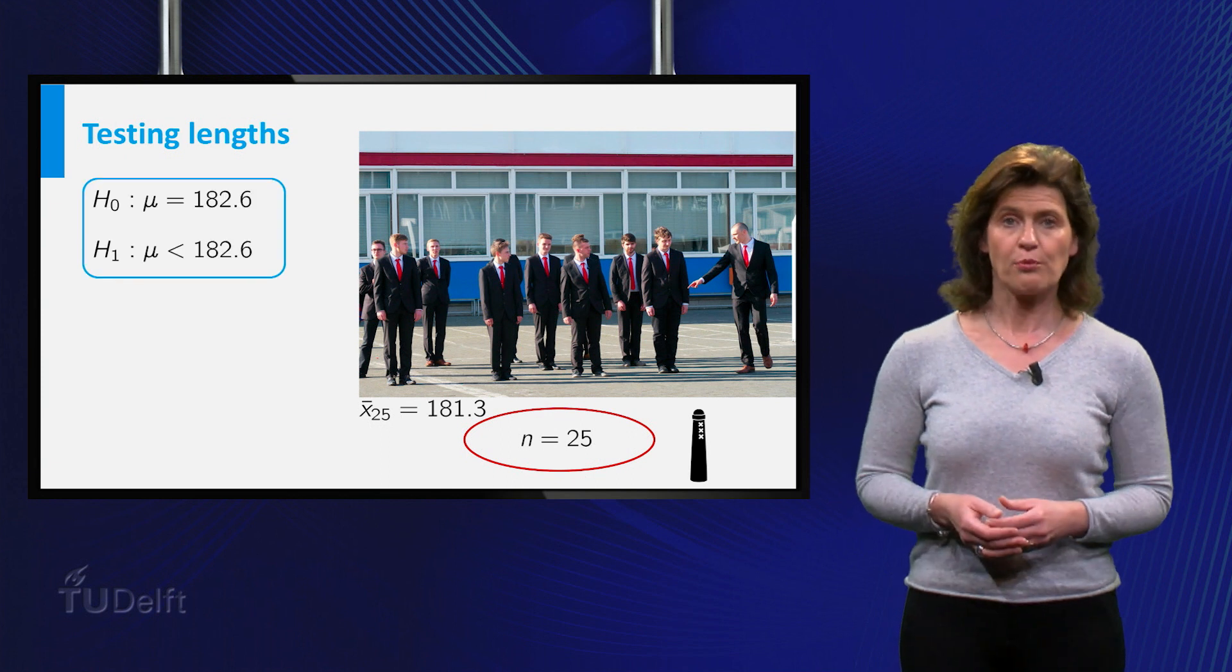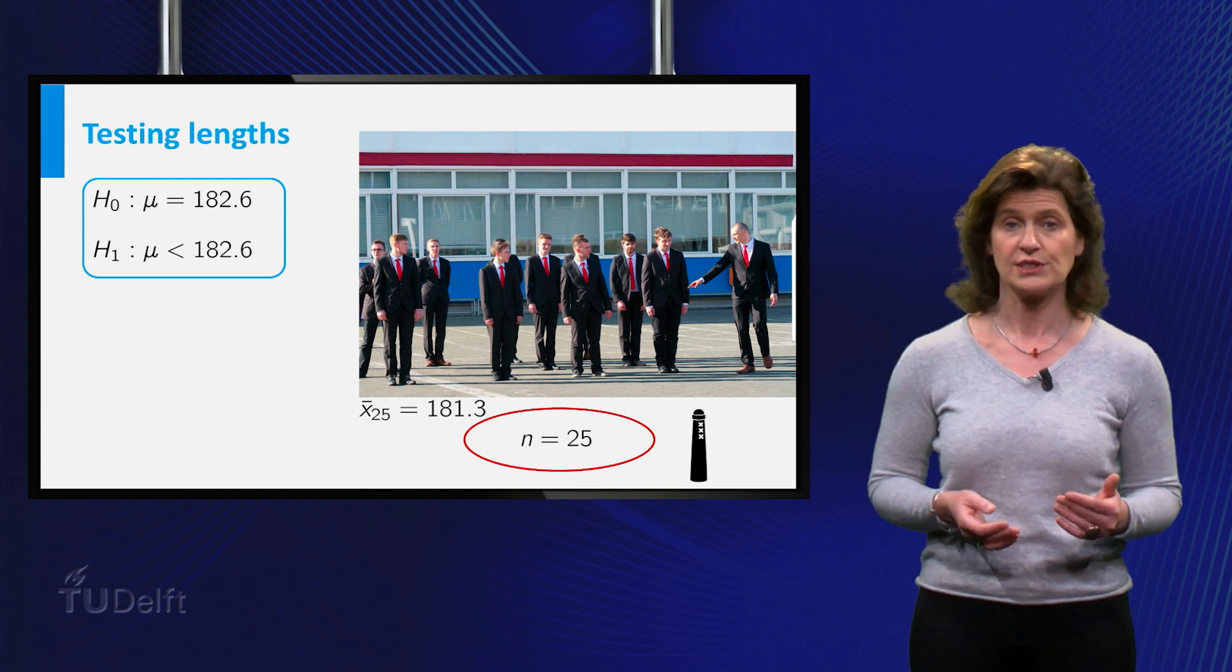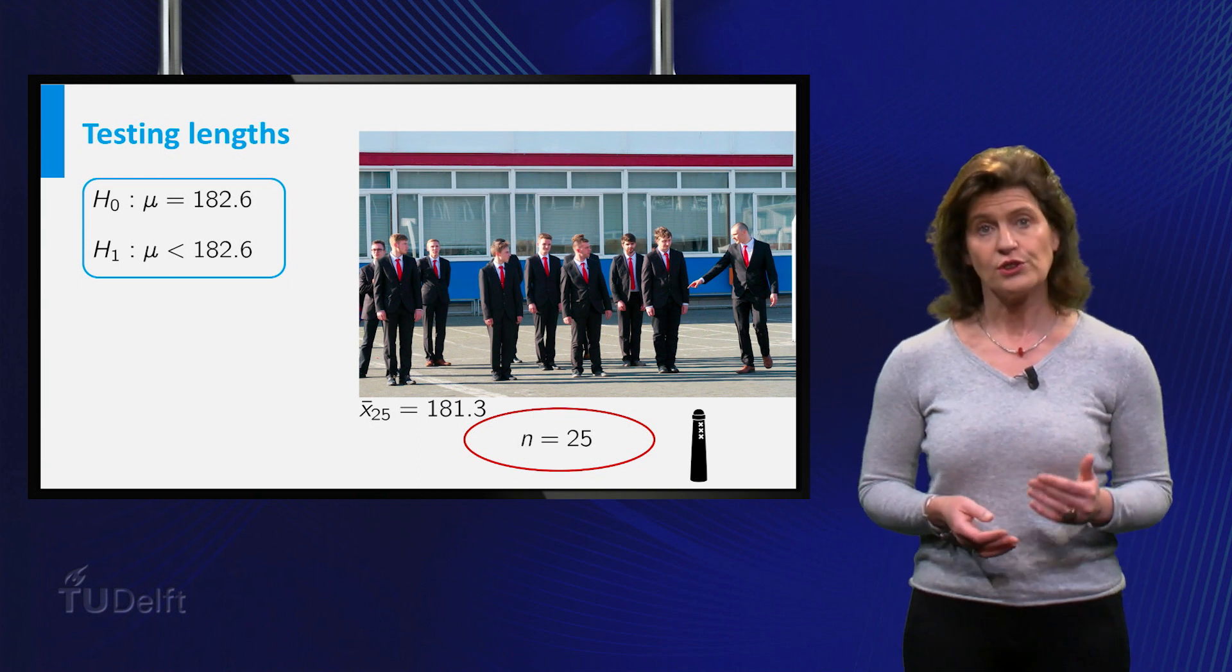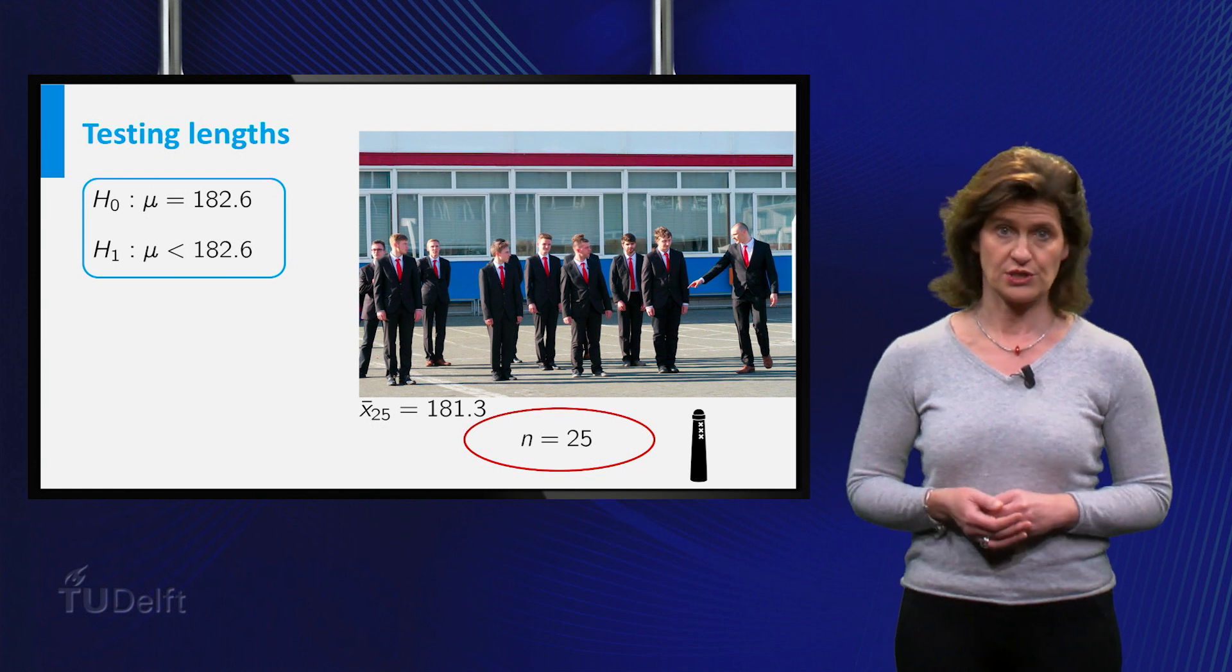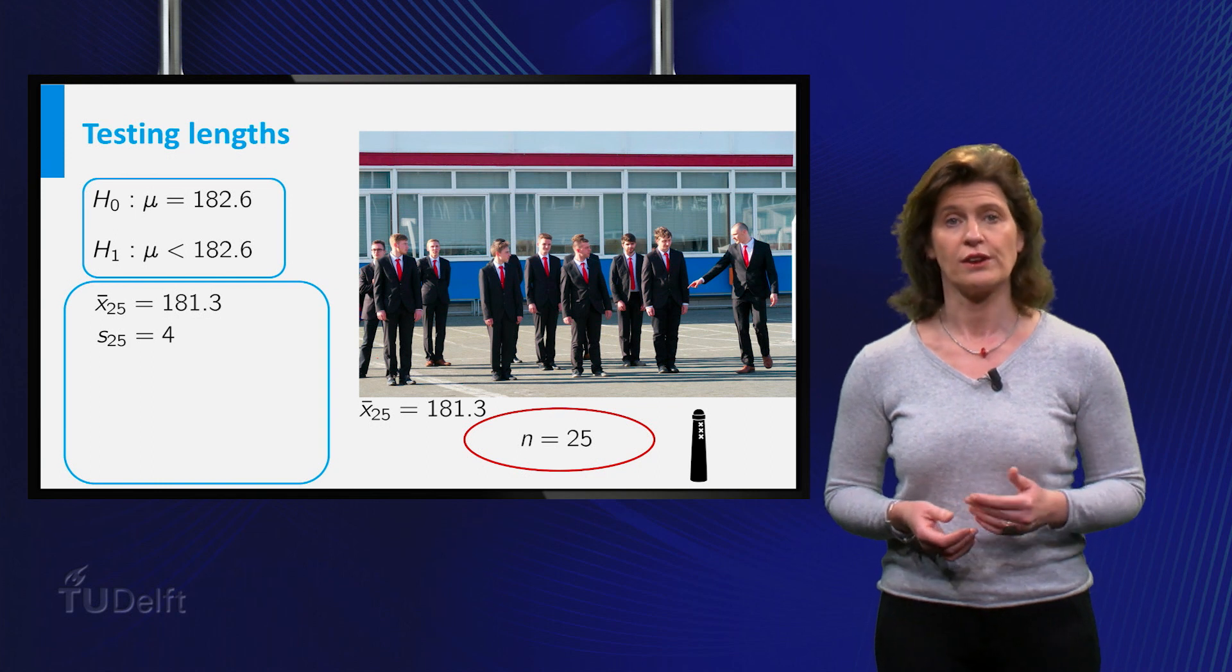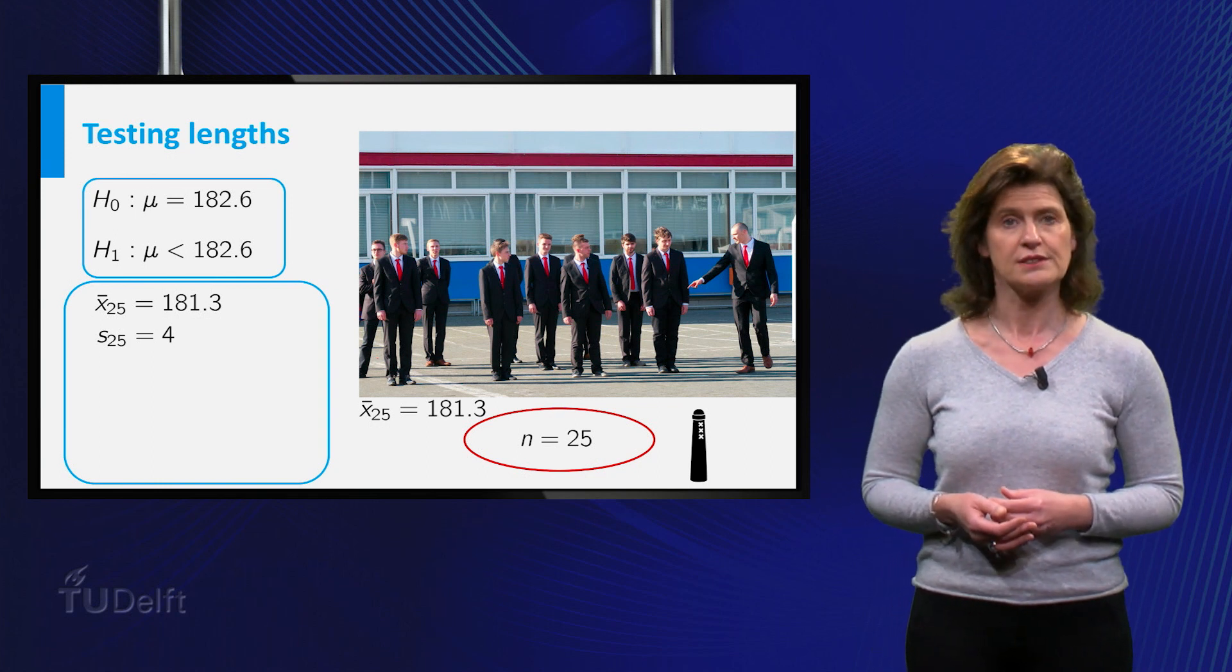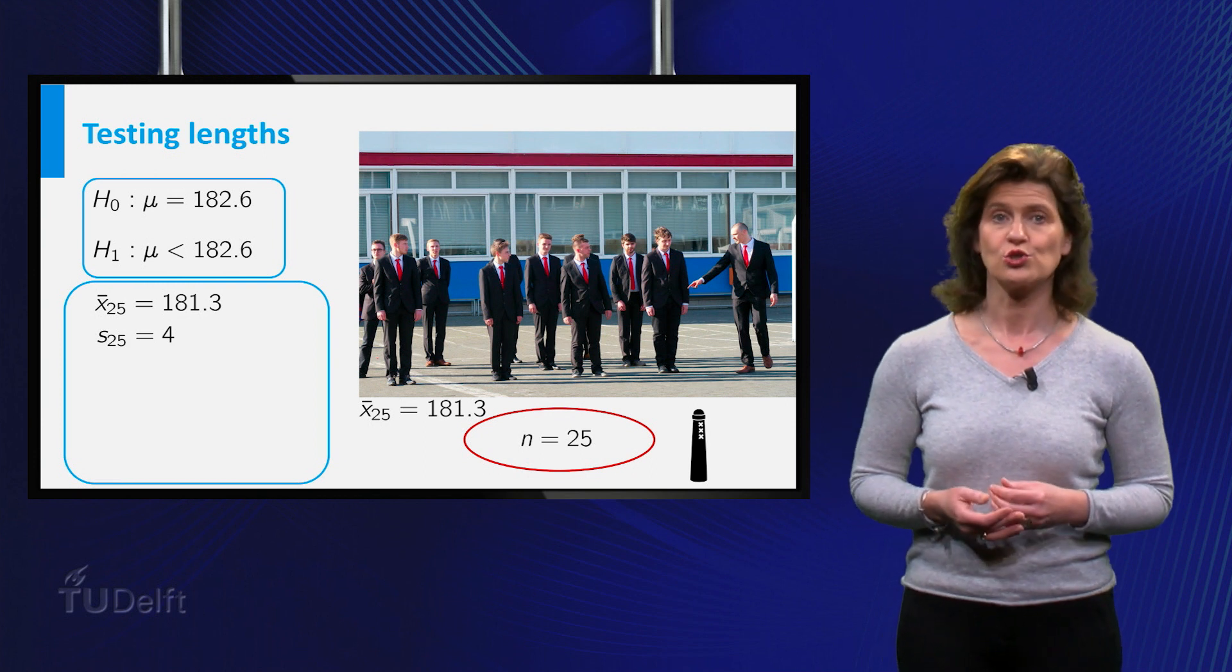Well, the null hypothesis is that the average length of the Amsterdam students is the same as the national average length. And the alternative hypothesis is that the average length is below the national average. The mean length of the 25 students is equal to 181.3 cm. The sample standard deviation was computed by the researchers to be 4 cm.